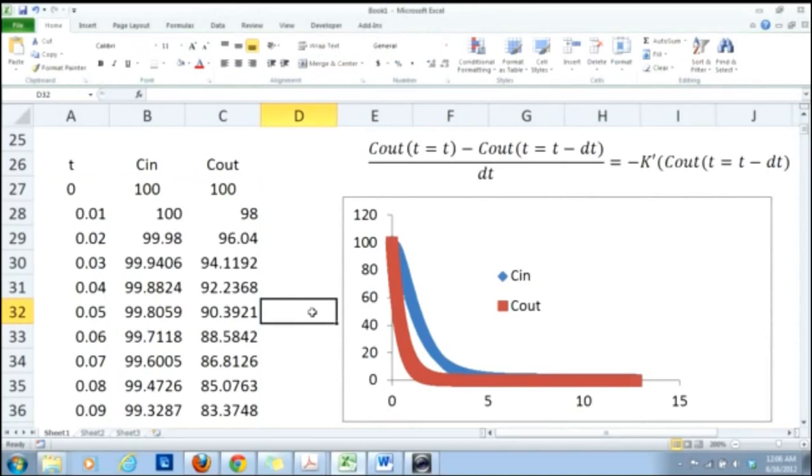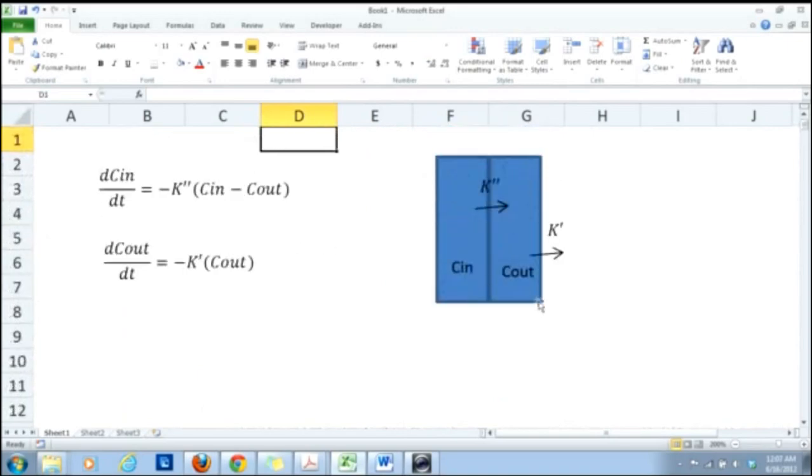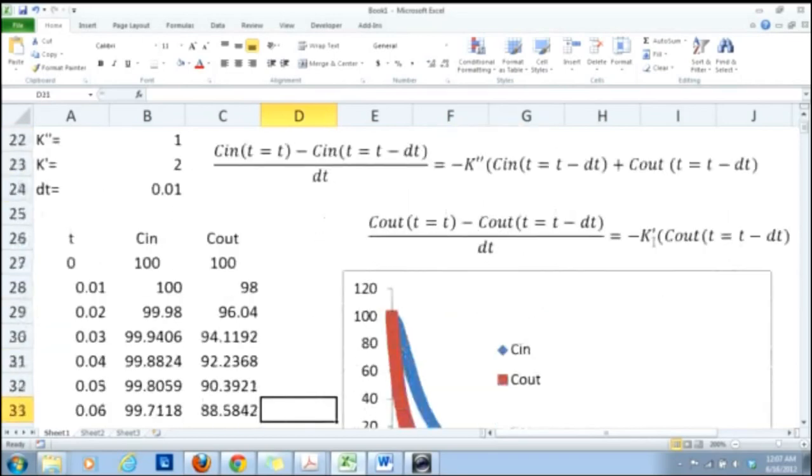But as you can see these two curves go to zero because if you look in our model the diffusion is happening from chamber to the open air and open air is a sink. So everything will eventually evaporate and goes to air. So everything will be consumed. So concentration should go to zero. That means our model is working.